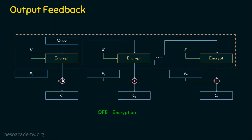The output of the encryption function is given to an XOR function, which takes this output and the plaintext. The XOR of this plaintext and this output is actually the ciphertext C1. For generating C2, we require P2, which is XORed with the output of the encrypt function. This encrypt function takes the key and the output of the previous encryption as inputs. So the output of the previous encryption is given as input to the next ciphertext generation. This process continues to generate all ciphertext blocks for all plaintext blocks.